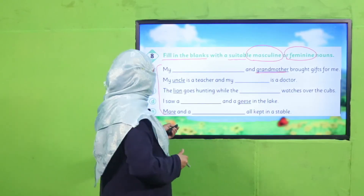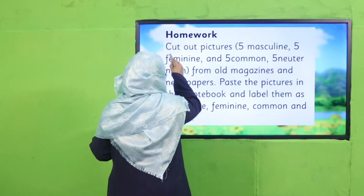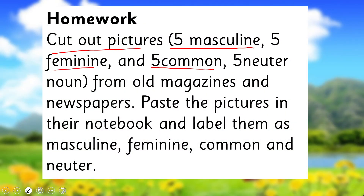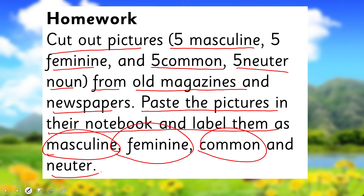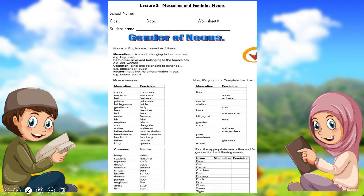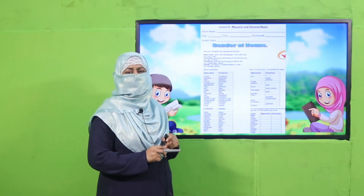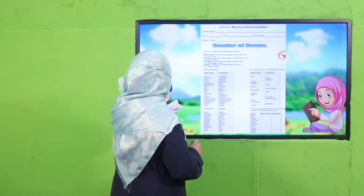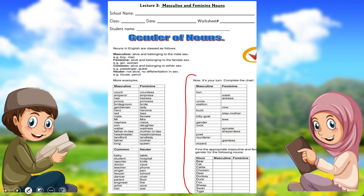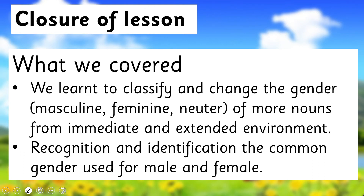Are you done? Good job! Here is your homework: cut out pictures — five masculine, five feminine, five common, and five neutral gender nouns — from any old magazine or newspaper. Paste these pictures in your notebook and label them as masculine, feminine, common, and neutral gender. My dear fellow teachers, the worksheet, lesson plan, and PowerPoint presentation links are given — please click, download, and provide students with the printed worksheet for practice. Students, complete the tables for the opposite genders.